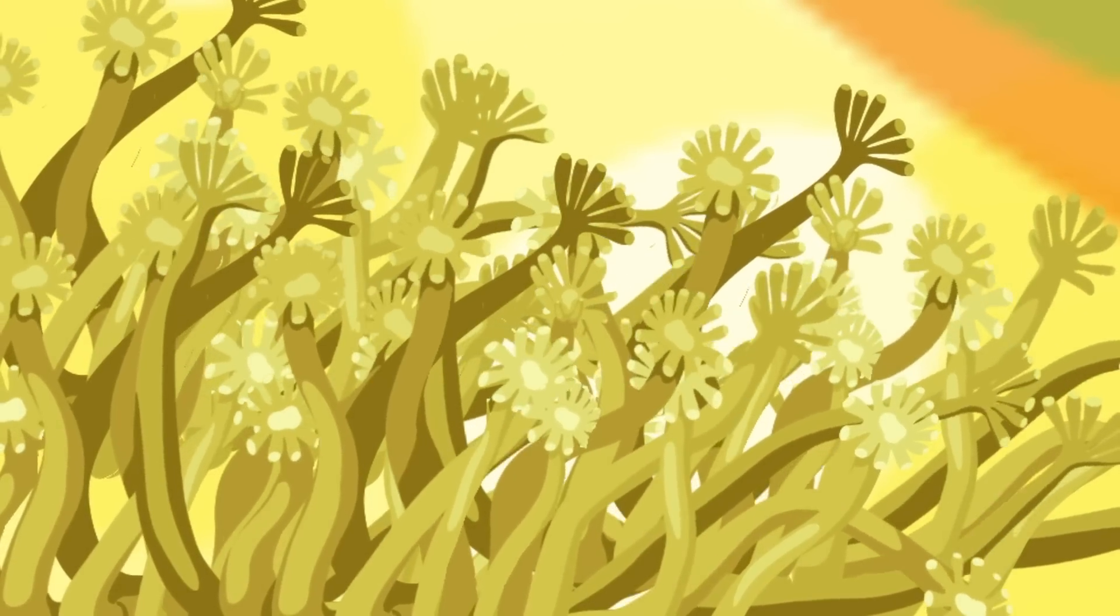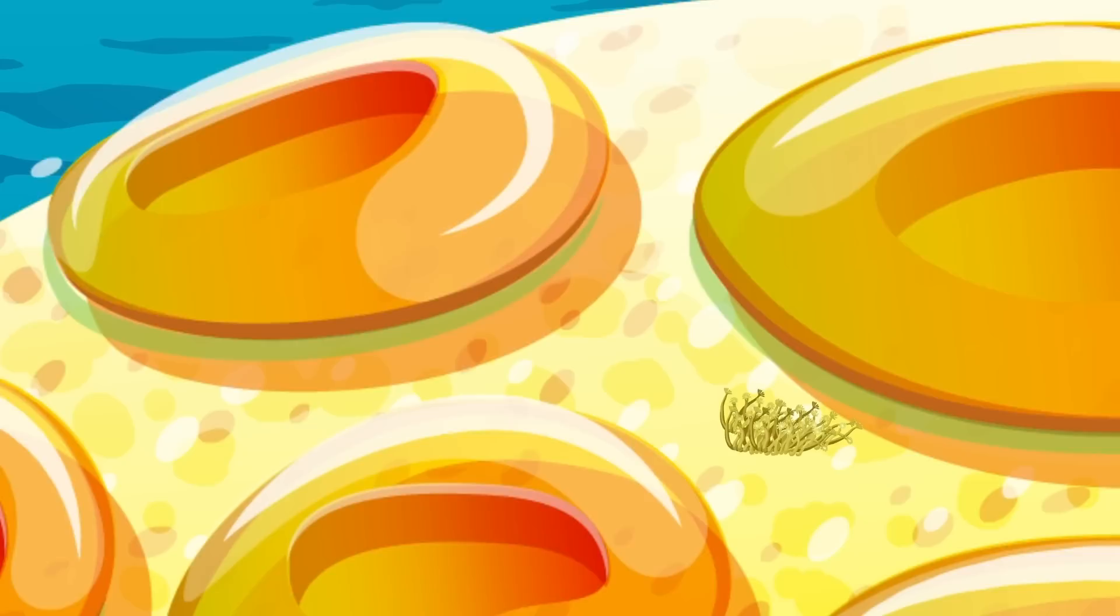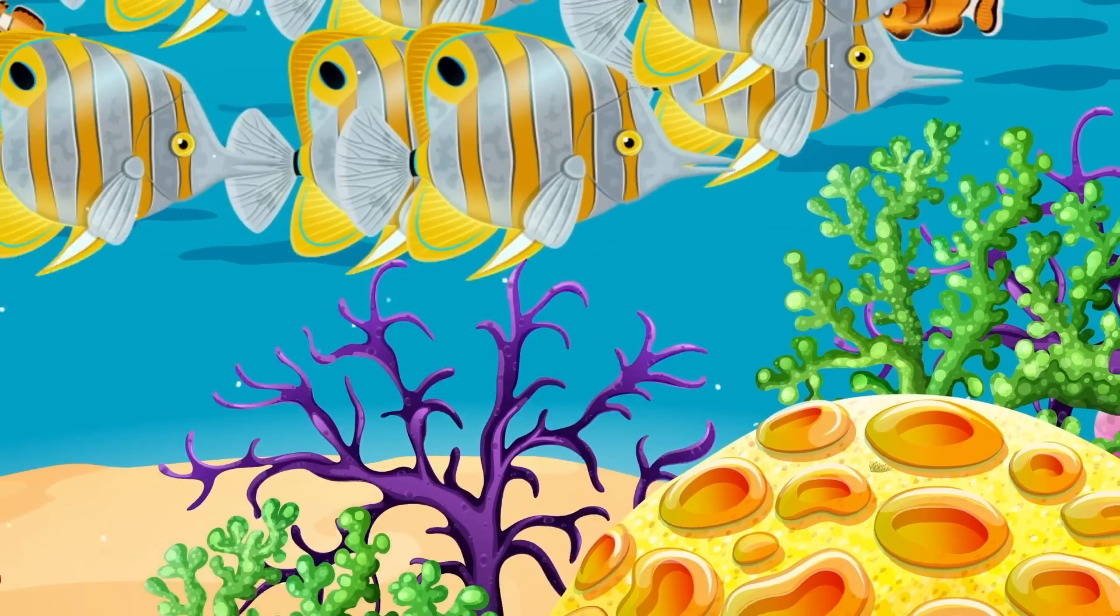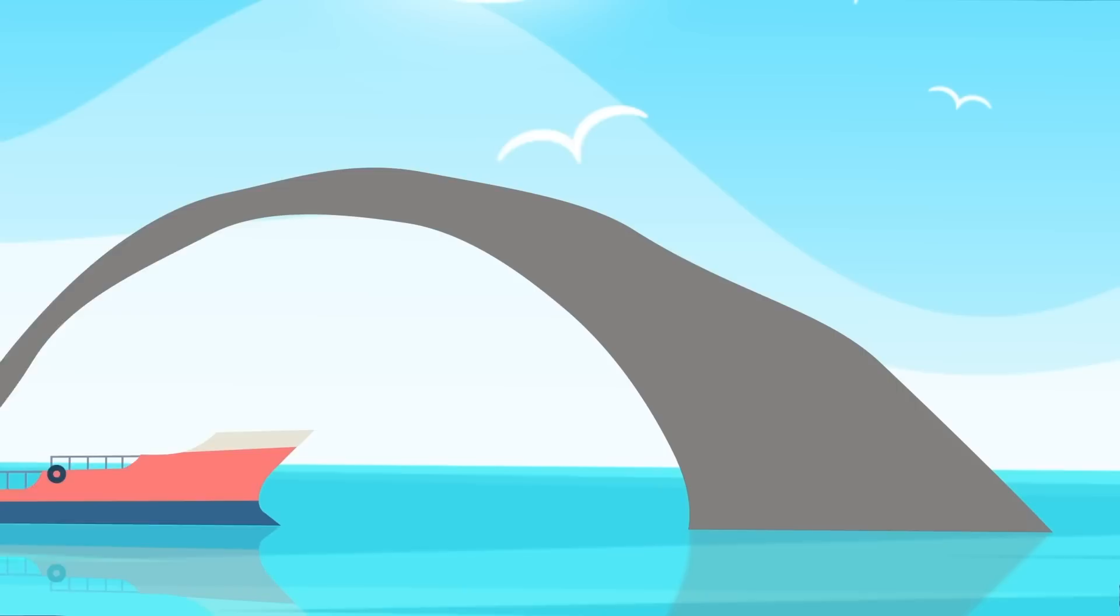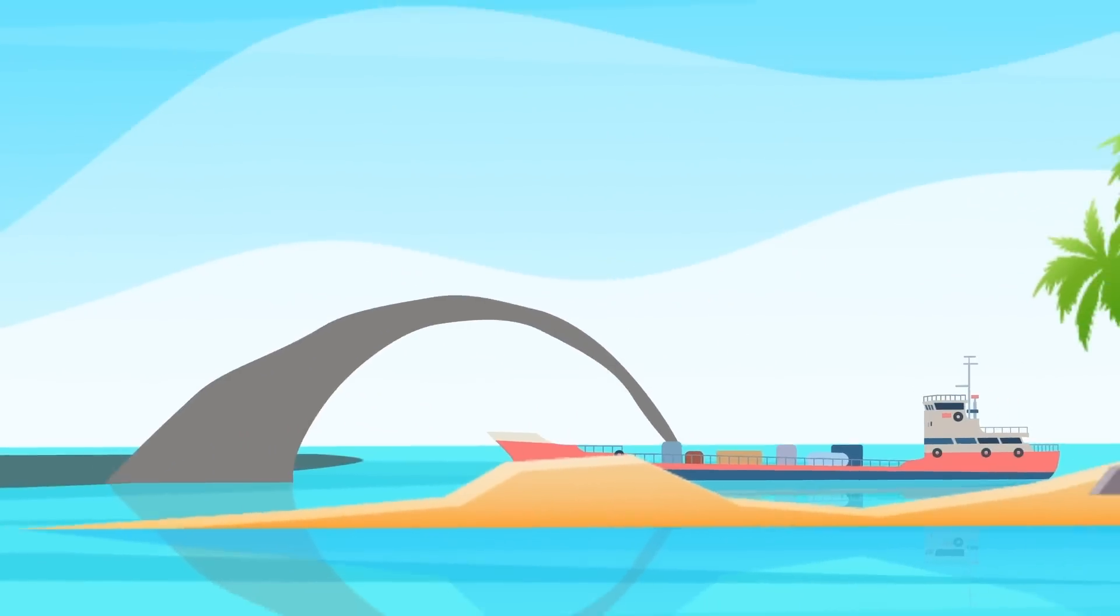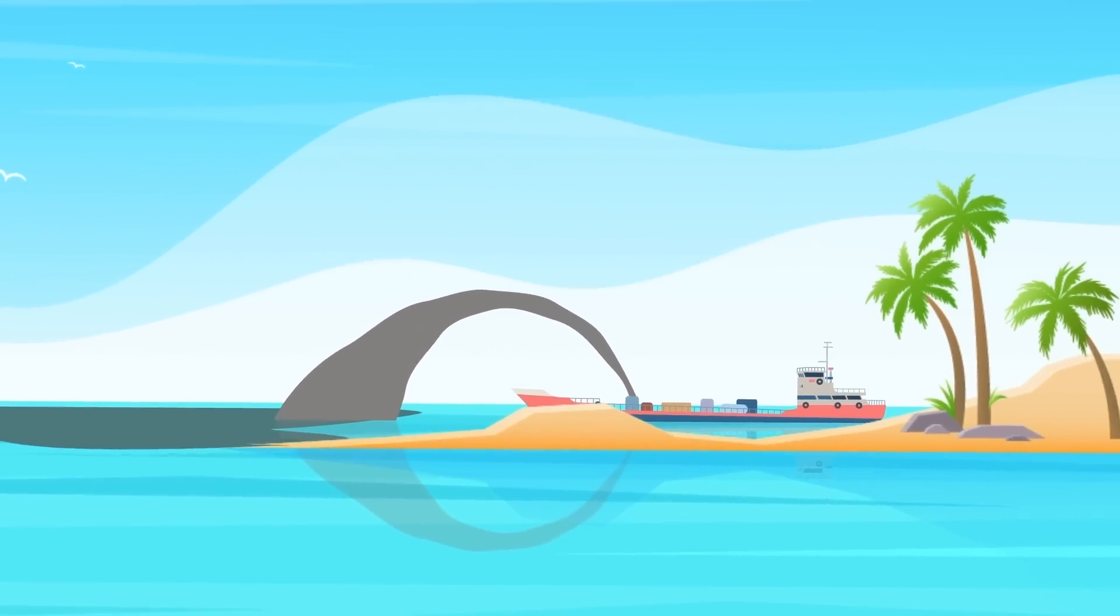The polyps use very small tentacles to move food to their mouth and excrete waste that is used by algae and other organisms as a source of nutrients. Over time, they reproduce and build on one another, creating the intricately beautiful coral structures that we have in our oceans today. But coral reefs are being threatened.